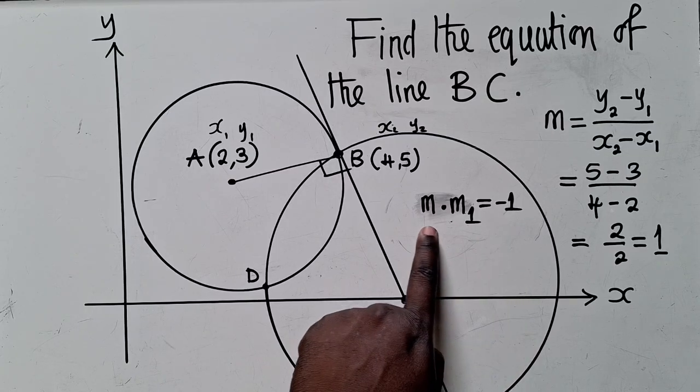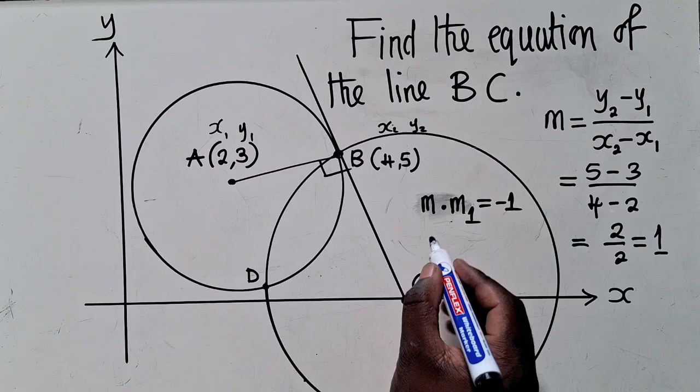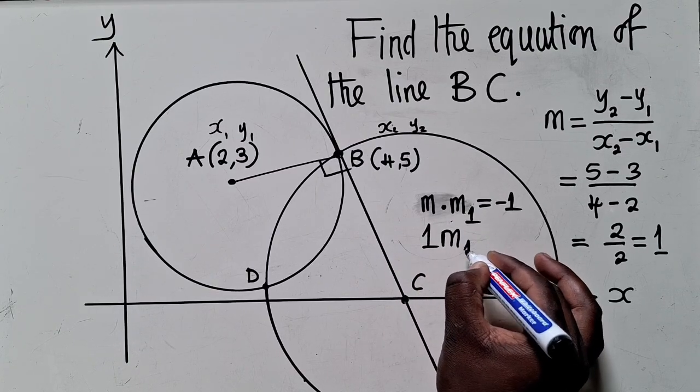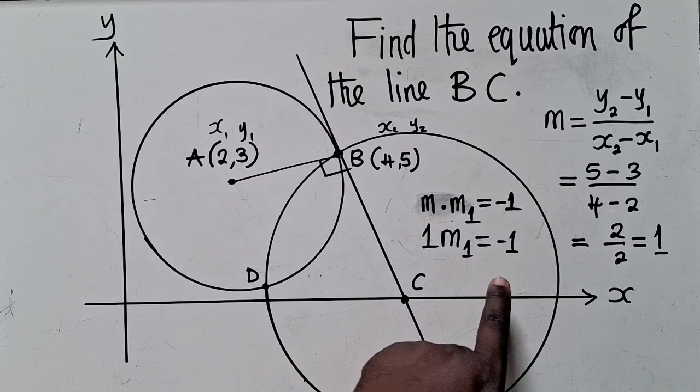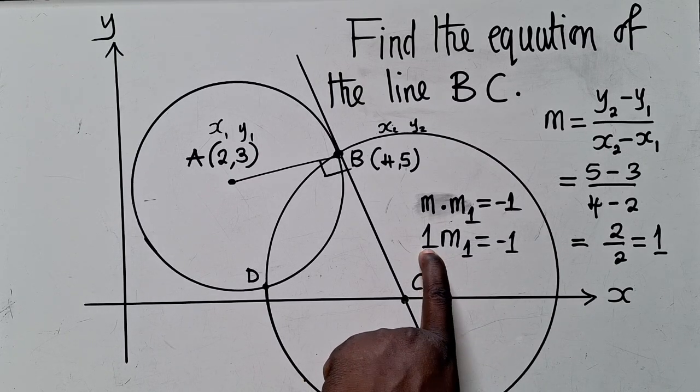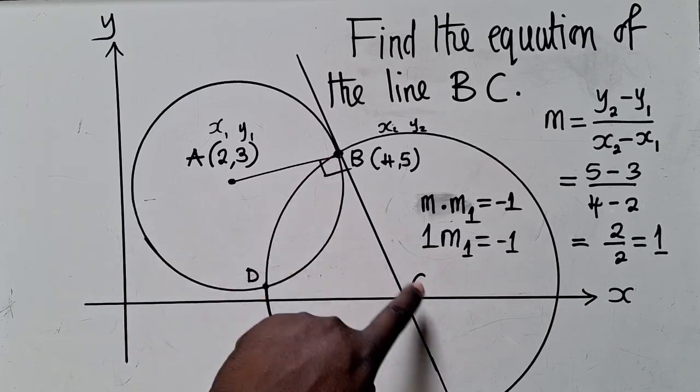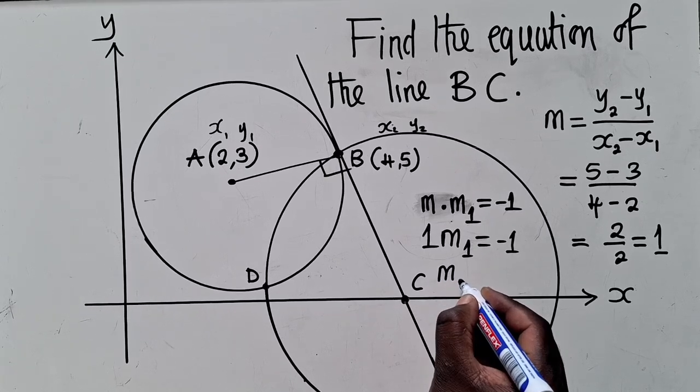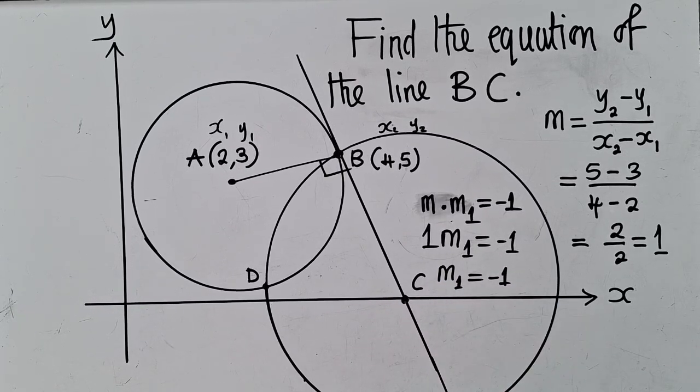Look at this. We know the gradient of the original, which is 1. We can write it right over here. And then here, we've got M1 is equal to negative 1. So we solve for M1. When we solve here, M1 will be equal to negative 1. So the gradient of this line is negative 1.